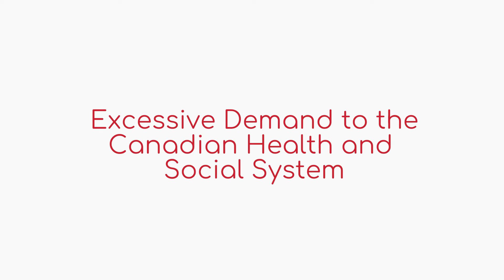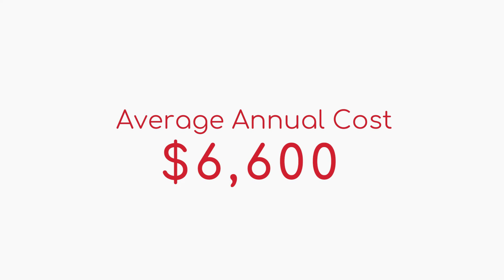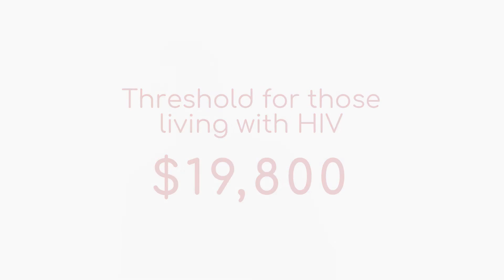In order to limit Canada's publicly funded health and social services expenses, applicants who are expected to place an excessive demand on the health and social system could be denied entry into Canada. This excessive demand criteria is based on the estimated average cost for health and social services in one year. As the cost for health and social services needed to care for a person living with HIV are expected to be higher than the average, the Minister of Immigration, Refugee, and Citizenship Canada announced in 2018 that the threshold for the excessive demand clause for applicants living with HIV would be raised by three times the average annual cost for Canadians, raising that dollar amount to almost $20,000. It is anticipated that the average annual health and social services costs for most applicants living with HIV will be under this threshold.